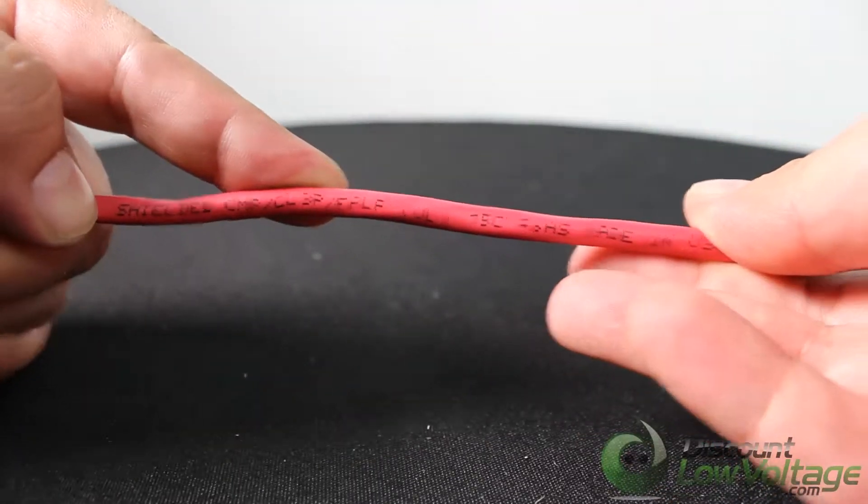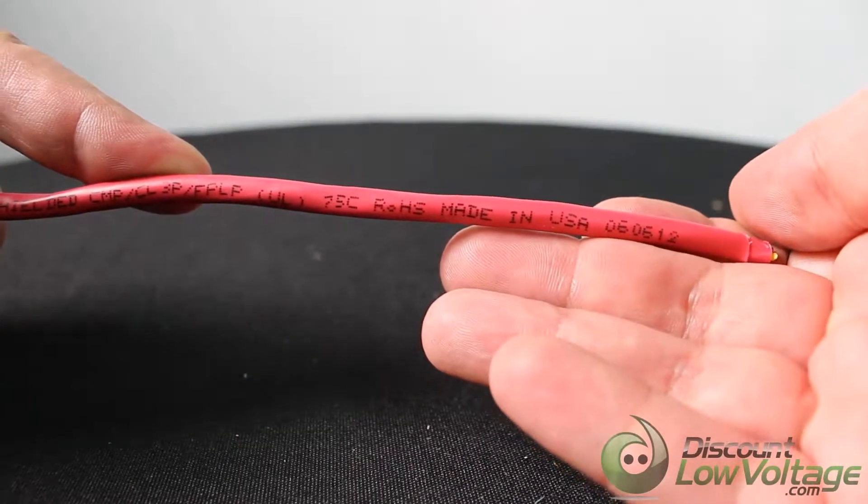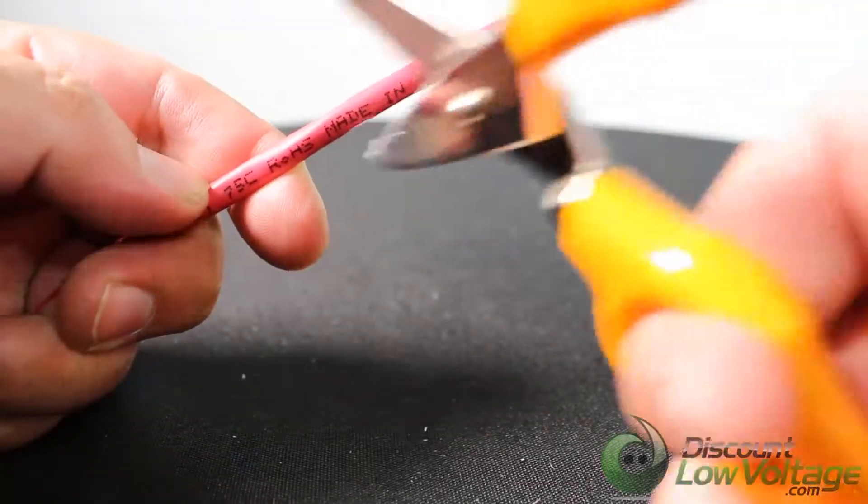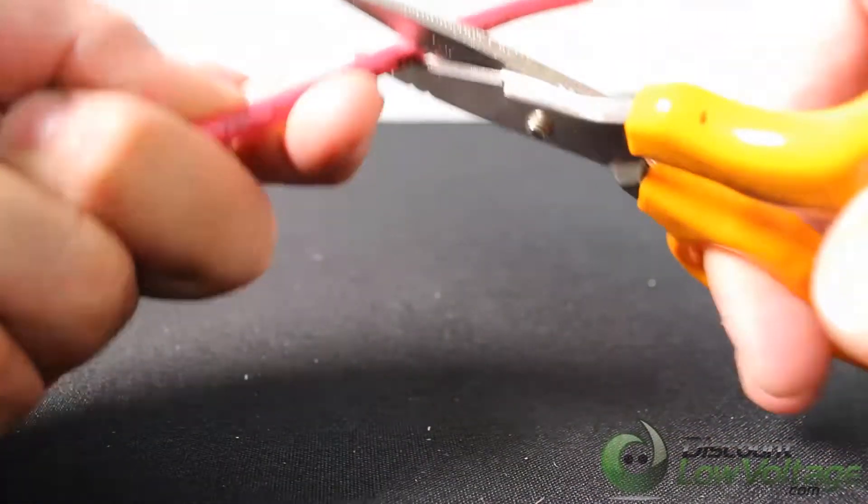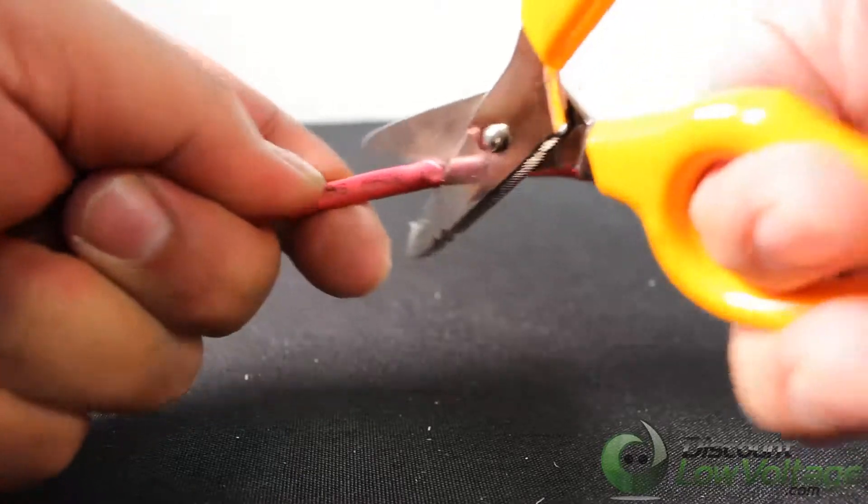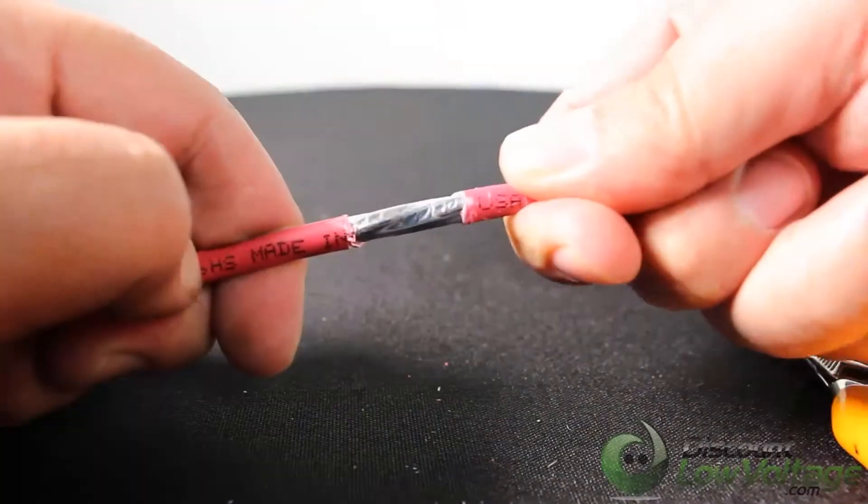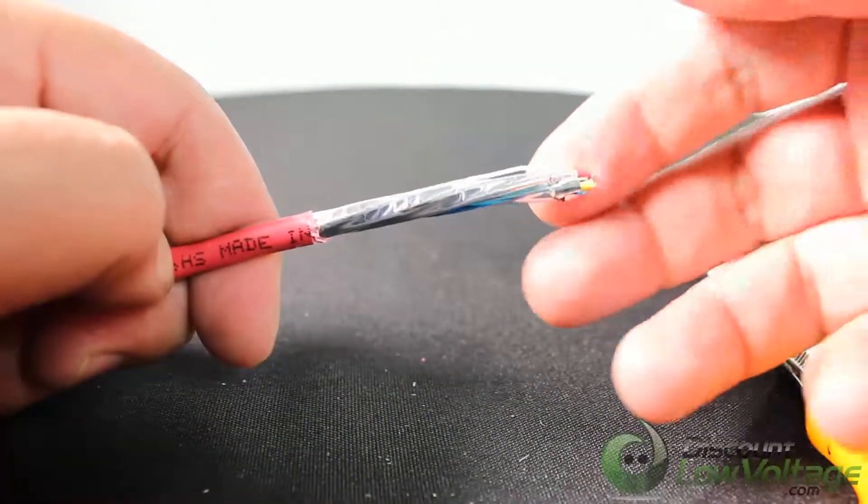All plenum-listed fire alarm cables provide compliance to NFPA Article 760, NFPA Article 725, FPLP, and CL3P. These are rated for power-limited 300 volts.